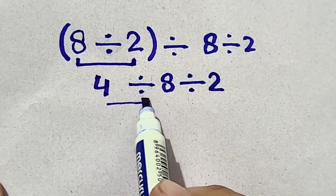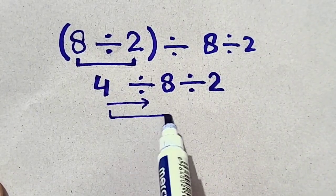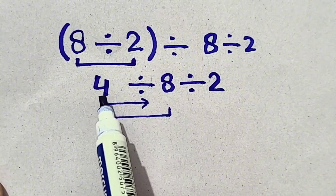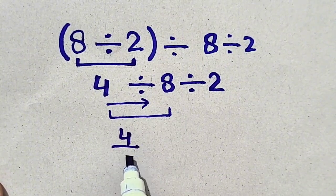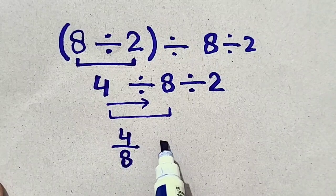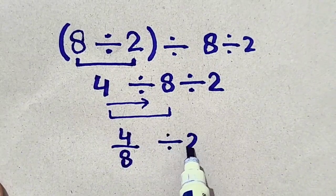Now, we have to move from left to right. So, we have to divide 4 by 8, which can be written as 4 by 8 divided by 2.